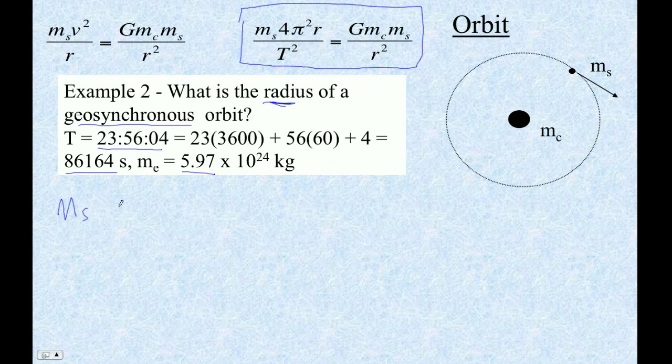So we go mass of the satellite times 4π²R over T² equals Gm_cm_s over R².